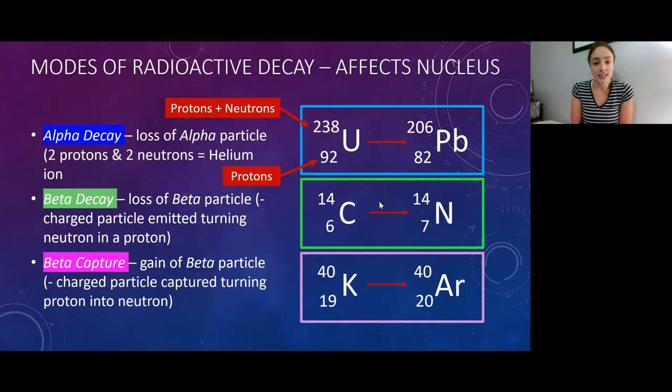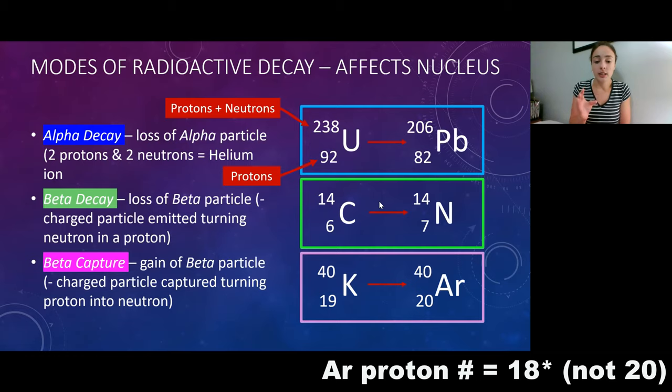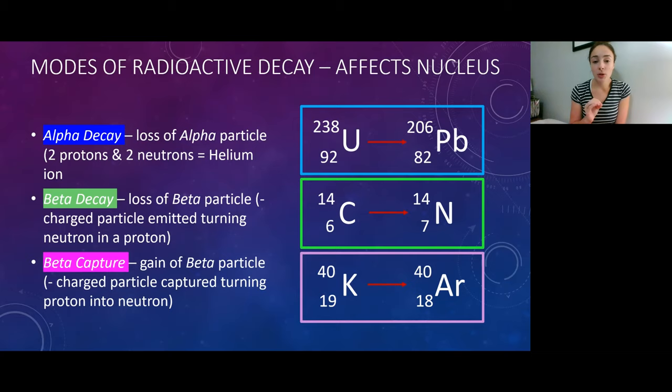The last decay process we're going to discuss is beta capture. So this is basically the opposite of beta decay. Instead of giving away a negatively charged particle, the nucleus is actually going to capture a negatively charged particle, turning a proton into a neutron. Because the proton is positively charged, if it gets a negative charge, it'll become neutral. In terms of potassium-40, it decays into argon-40, which, as you can see, has a lower number of protons, but the same number of protons and neutrons. So it's just the opposite of what we saw happen in the beta decay. Basically, the proton number went down, but a proton turned into a neutron, so a new neutron number went up, and therefore the protons plus neutrons stay the same.